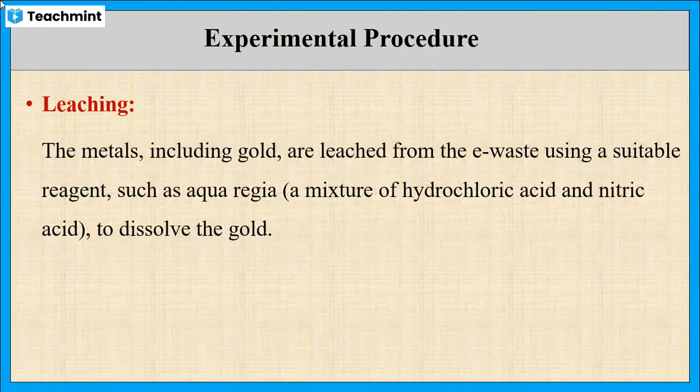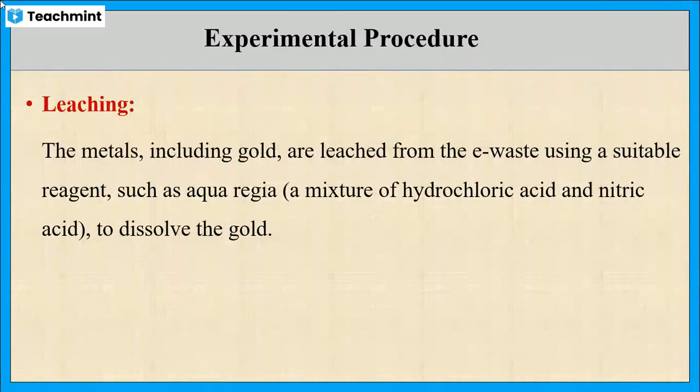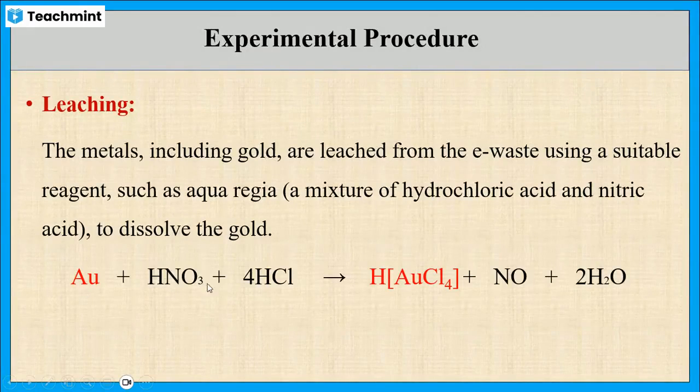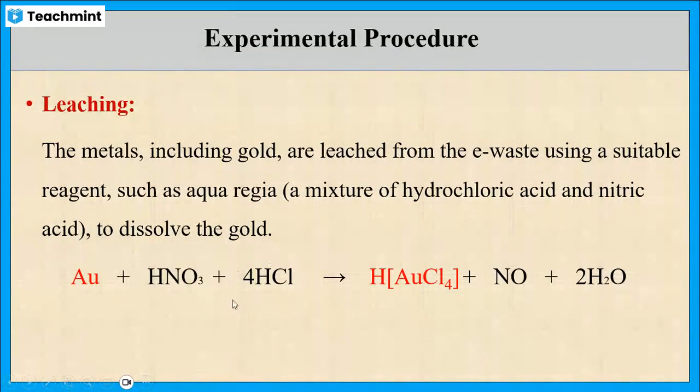So, in order to extract gold from e-waste, aqua regia leaching agent is used to dissolve the gold. Aqua regia is a mixture of hydrochloric acid and nitric acid. When gold-containing e-waste is mixed with nitric acid and hydrochloric acid, the formation of chloroauric acid takes place along with nitrogen oxide and water. This is the leaching step.